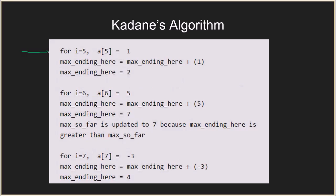At index five, element is one, so max_ending_here becomes one plus one, which is two. Still smaller than max_so_far of four, so no update. At index six, element is five, so max_ending_here becomes two plus five, which is seven. Now max_ending_here is greater than max_so_far, so we update max_so_far to seven. At index seven, element is minus three, so max_ending_here becomes seven minus three, which is four — smaller than max_so_far, so no update.